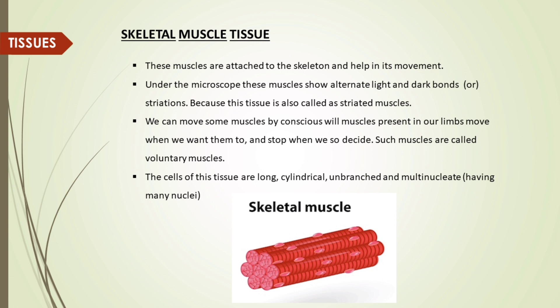The first type of muscle tissue is skeletal muscle tissue. These muscles are attached to the skeleton and help in its movement. Under the microscope, these muscles show alternate light and dark bands or striations, because of which this tissue is also called striated muscles. We can move some muscles consciously. Muscles present in our limbs move when we want them to and stop when we decide — such muscles are called voluntary muscles. The cells of this tissue are long, cylindrical, unbranched and multinucleate, meaning having many nuclei.